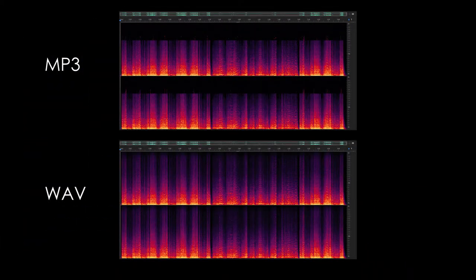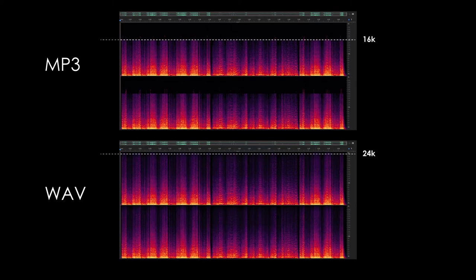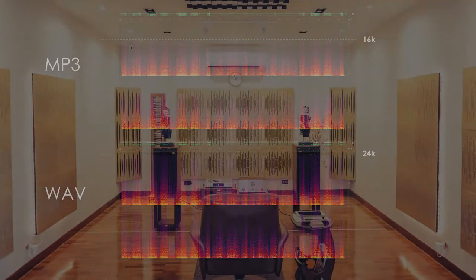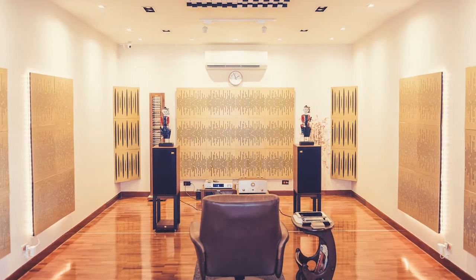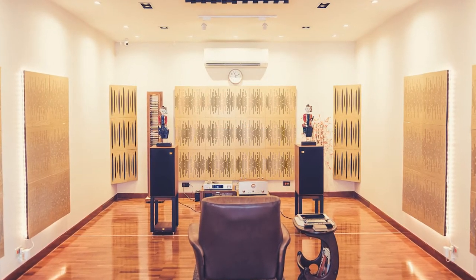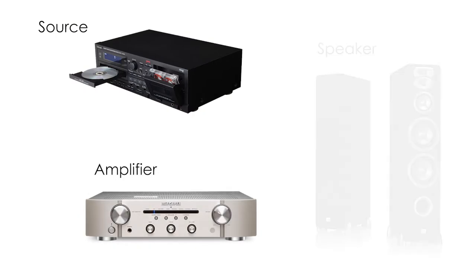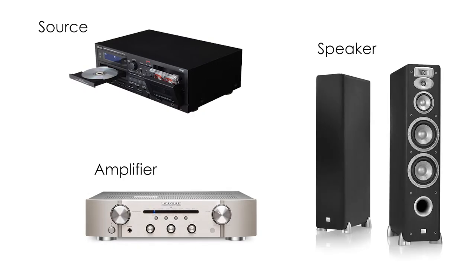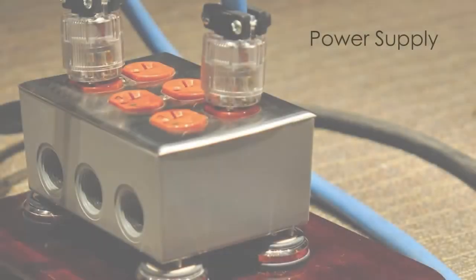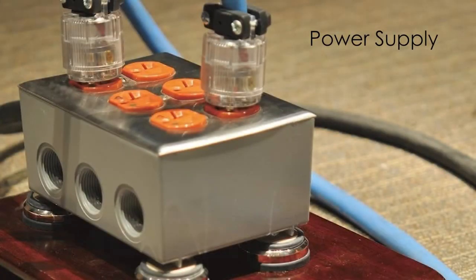Common MP3 files cannot fully exploit the wide sound range of high fidelity audio. With a suitable space, the equipment needed to constitute a high fidelity sound includes signal sources, amplifiers, and speakers — these three elements. In addition, it should be equipped with a clean power supply to get the ideal sound effect.